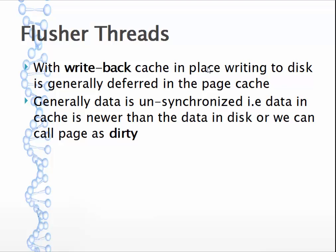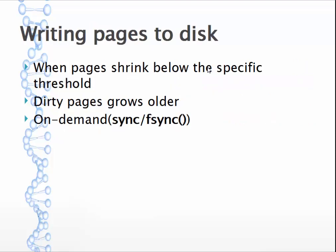When data in the page cache is newer than the data in backing store, we call that a dirty page - the better term is 'unsynchronized', meaning the data on disk and data in RAM are entirely different. There are three conditions under which dirty pages are flushed to disk: first, when free pages shrink below a threshold, the kernel starts writing dirty data blocks to disk to free up memory; second, when dirty pages grow older than a specific threshold, to ensure data does not remain dirty indefinitely.